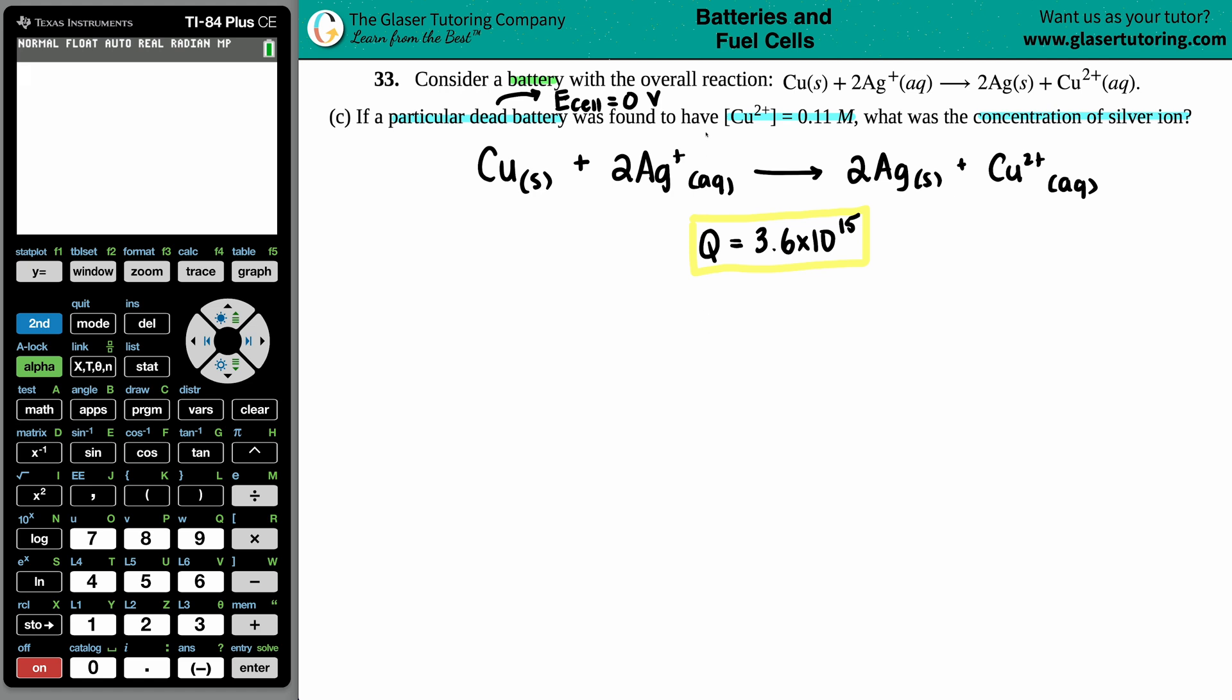Now from that information, they're now telling us that we have a Cu2 plus, which is this over here, of 0.11 molarity. And the question is, what is the concentration of the silver ion? The ion is always the charged element here. So we're searching for the molarity or the concentration of Ag plus. So we have the Q value. That's the reaction quotient, very similar to equilibrium constants. And remember, a Q value has the same formula as a K in which it's just products divided by reactants raised to their coefficients.